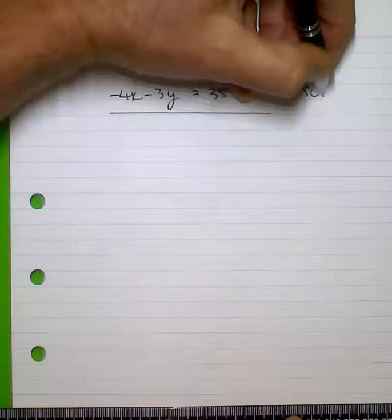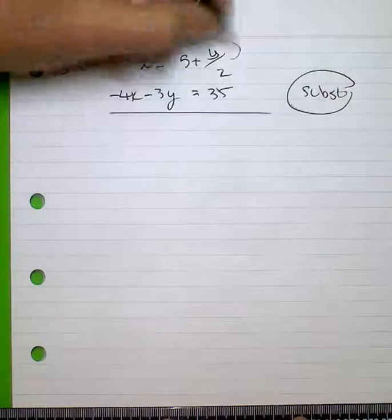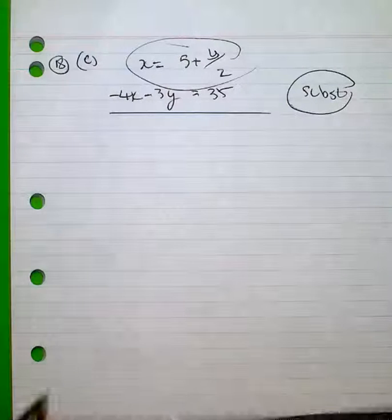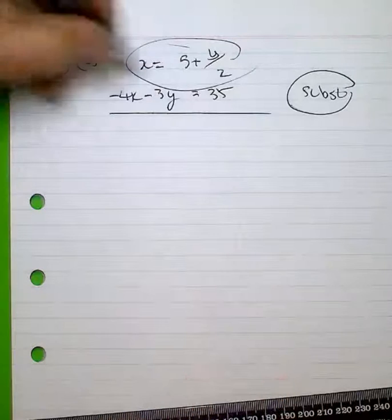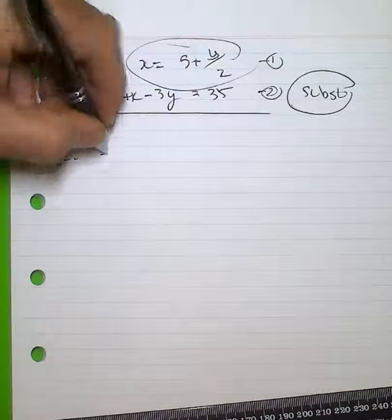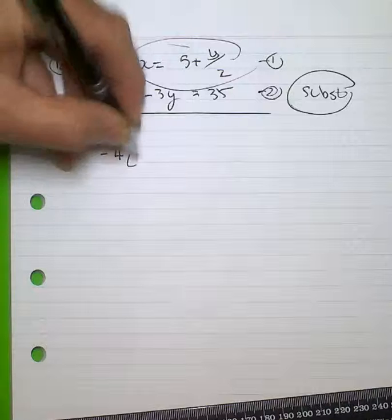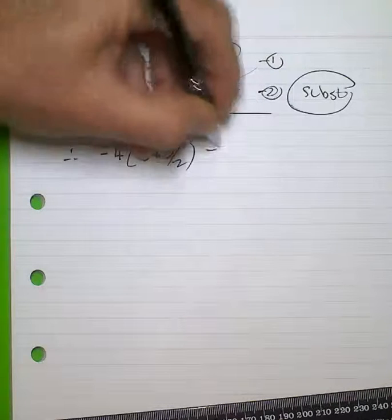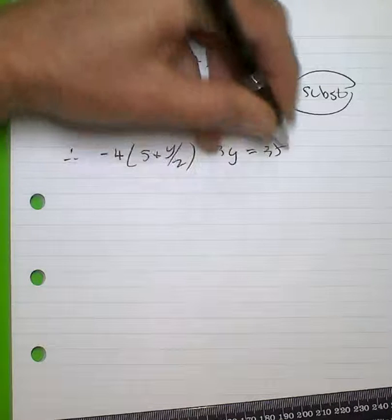In 18c, this clearly involves substitution. I'm going to substitute x = 5 + y/2 into the second equation. Therefore, -4(5 + y/2) - 3y = 35.